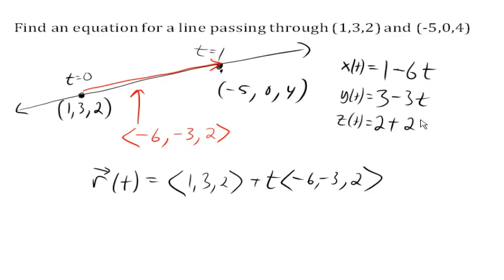Now again, remember parametric equations and vector equations are not unique. And so if we had started at this other point, the equation would be different, but it would be equivalent to the same line.